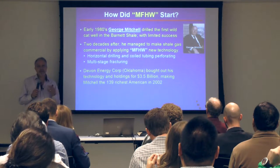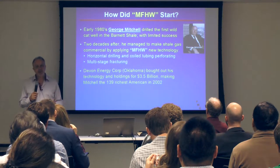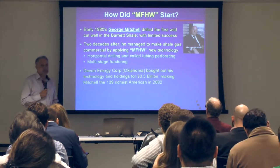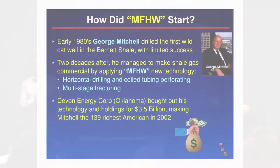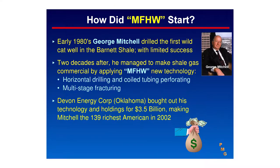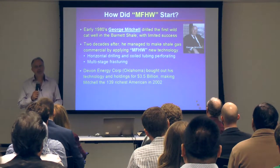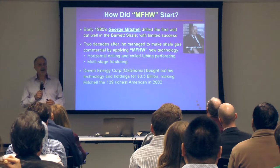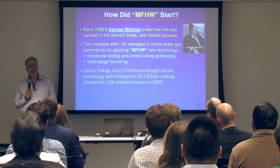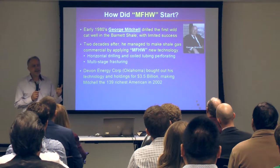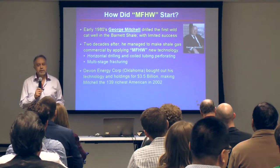How did it start with the multi-stage frack? This fellow, George Mitchell, is the guy behind all the trouble we're in — everything we do now with multi-stage fracking. He started the idea. He began drilling wells in the Barnett Shale initially with vertical wells, without much success. Two decades later, he came up with the horizontal well with multi-stage frack that made our industry so different. That's all we do now.